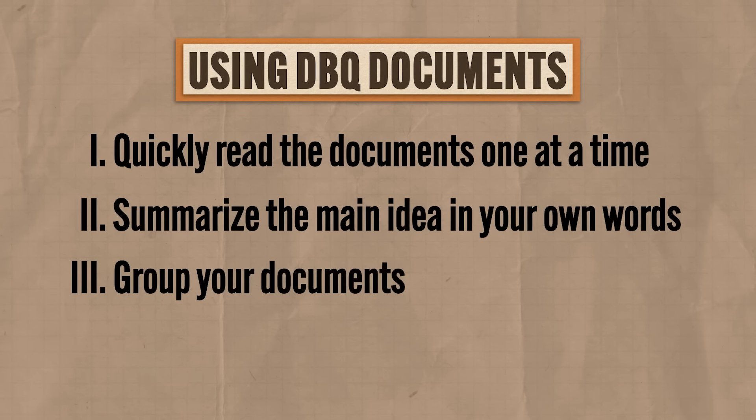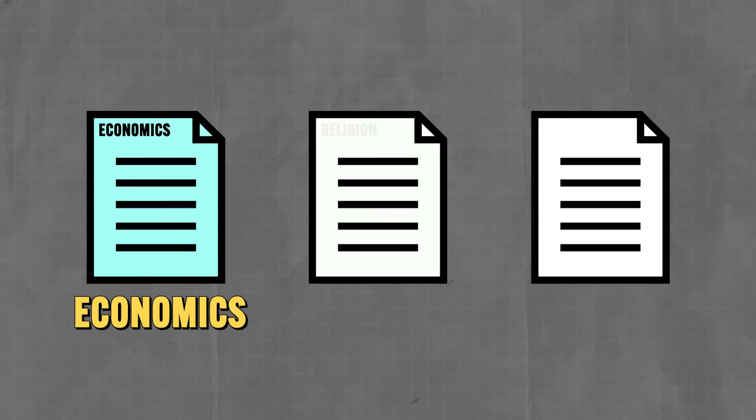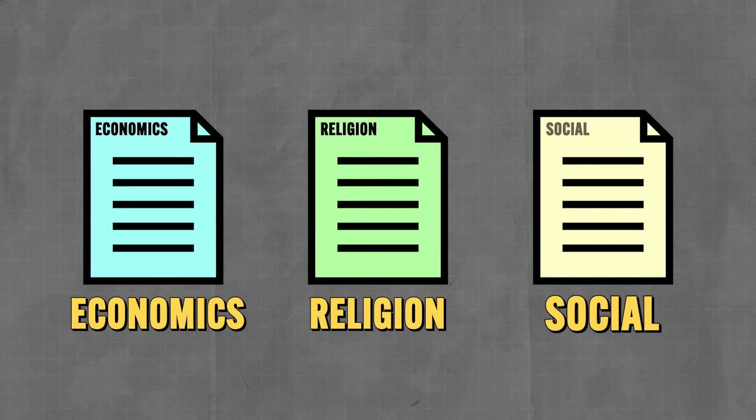Third, group your documents. Grouping is not required on the rubric, but it's often the difference between a high-scoring and a low-scoring essay. As you're reading through the documents and summarizing them, write next to each one what kind of document it is — economics, religion, social, and so on. These are going to be your grouping categories, and the rule of thumb is two to three categories since that's about all you can do with seven documents. Once you have your categories set up and documents organized under them, you have the beginnings of a thesis and the structure of your essay.